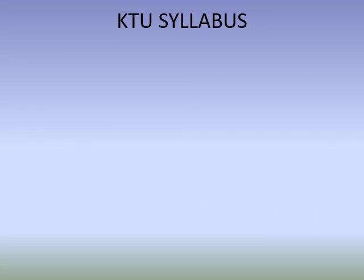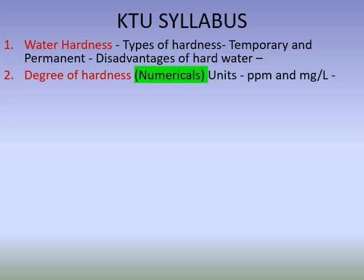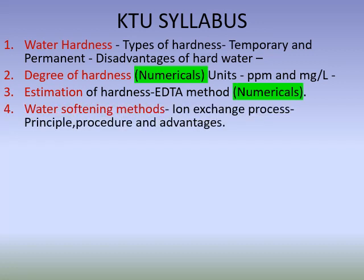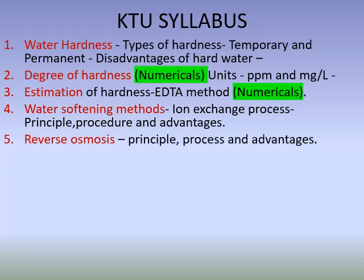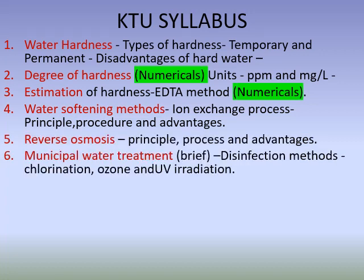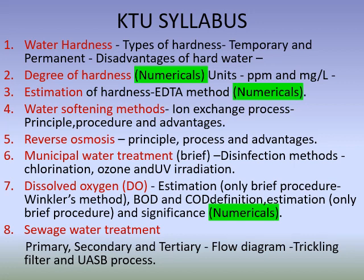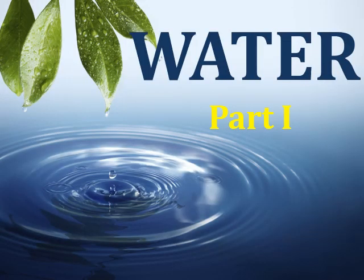The syllabus has been divided into eight parts: water hardness and degree of hardness including numericals, estimation of hardness including numericals, water softening methods and ion exchange method, reverse osmosis, municipal water treatment including disinfection methods — chlorination, ozonation, UV radiation — dissolved oxygen including BOD and COD determination including numericals, and finally sewage water treatment including cooling water filter and UASB method.